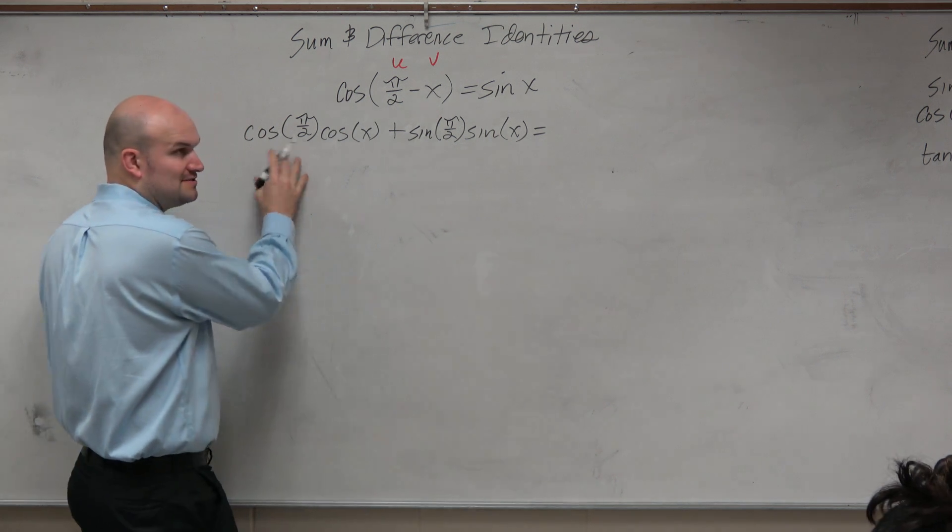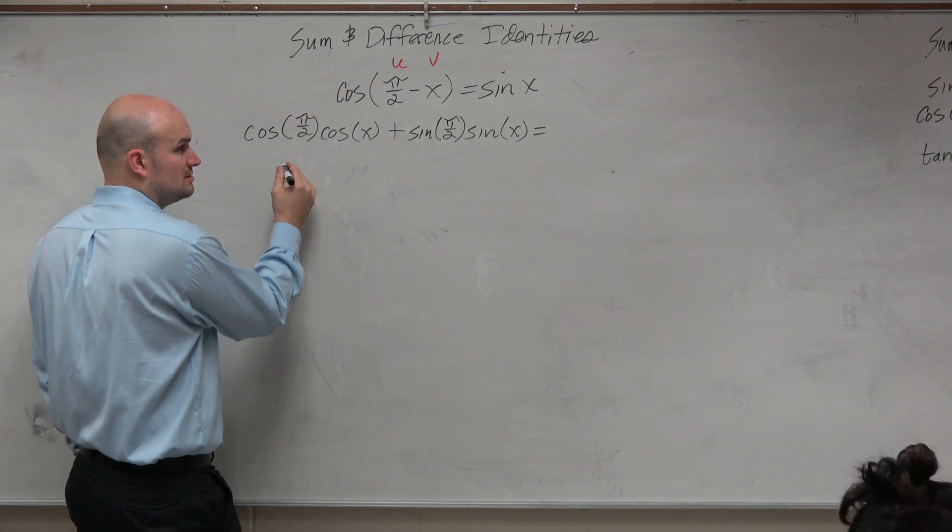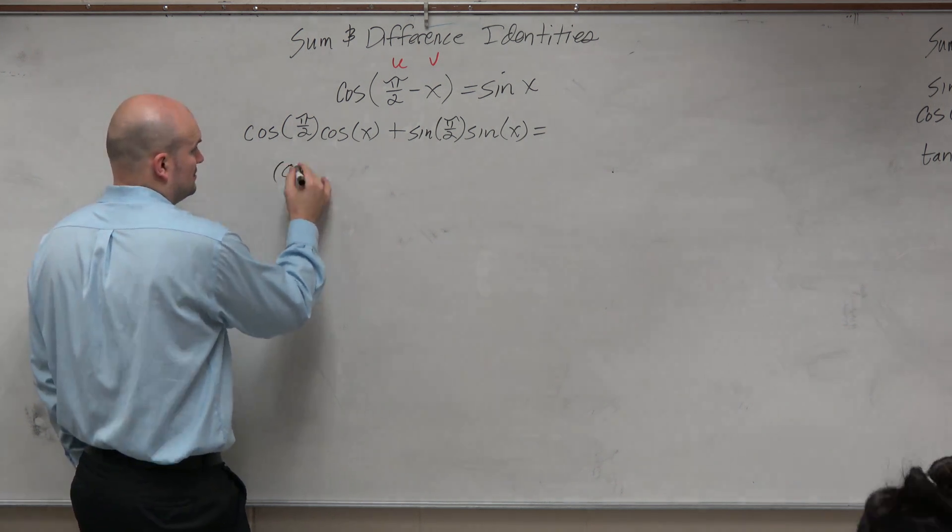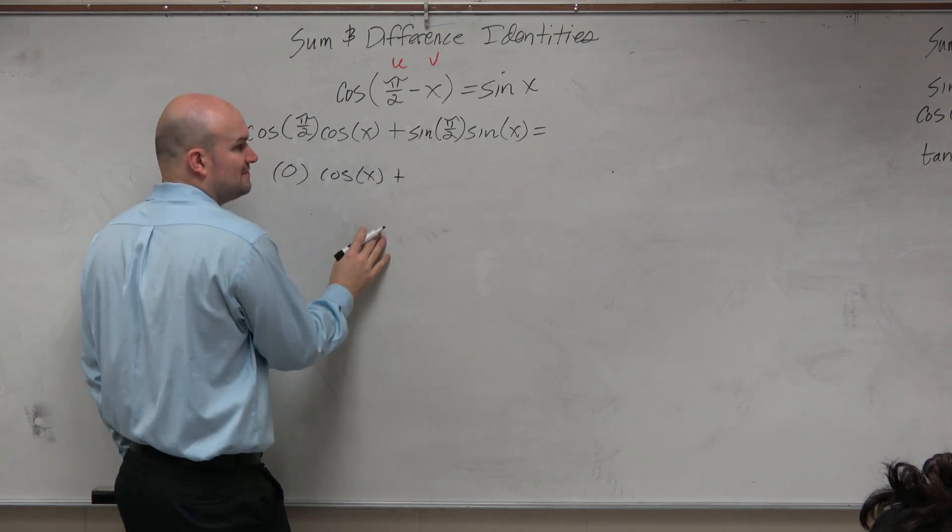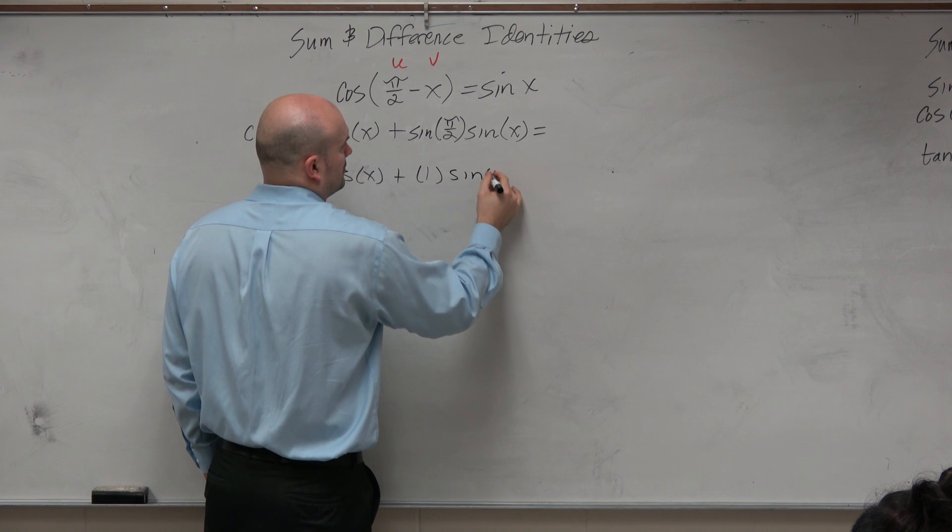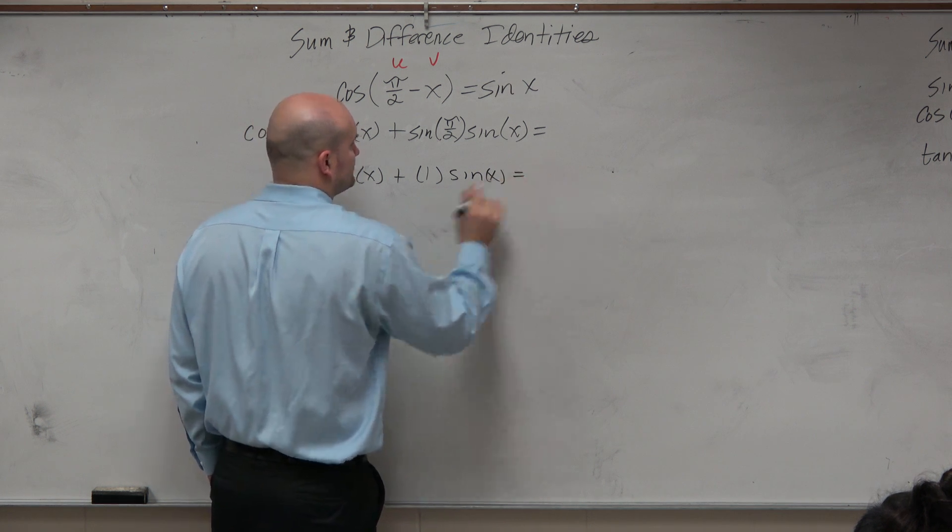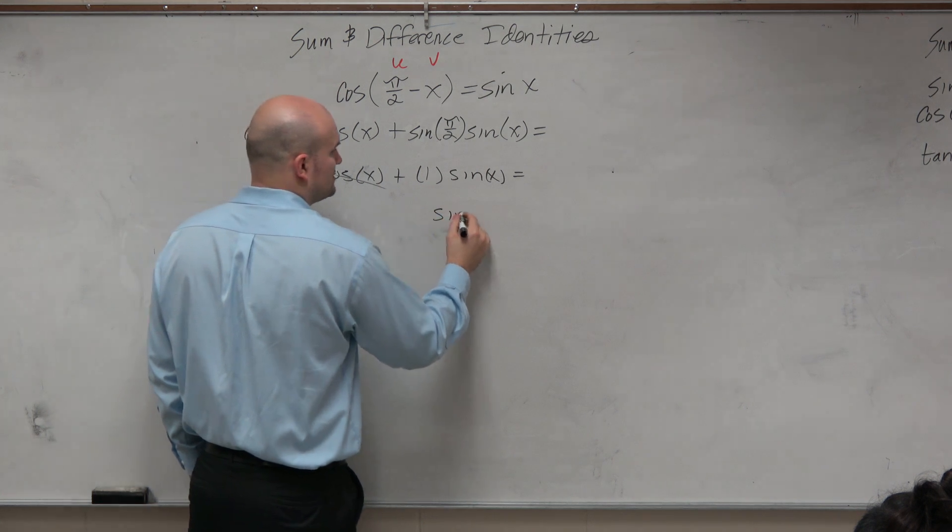The cosine of pi halves, let's think pi halves here, that's going to be at 0. Sine of pi halves is 1 equals, now obviously 0 times anything, and we're just left with 1 times sine of x.